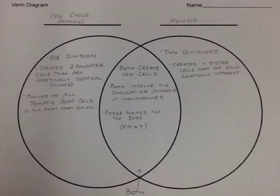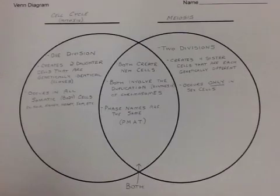Mitosis describes all somatic cells — somatic is just a fancy word for body cells. Some examples are hair, kidney, heart, skin, etc. Meiosis, on the other hand, occurs only in sex cells — specifically sperm if you're male, or egg if you're female.